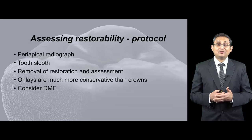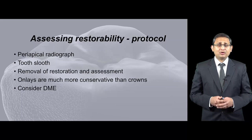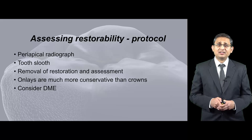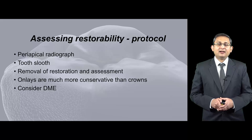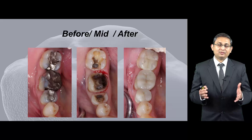Then you're going to remove the restoration and assess the tooth. As discussed in the photography lecture, you're going to take photographs and explain to the patient what situation the tooth is in. Onlays are much more conservative than crowns, so unless the patient is really symptomatic, I would prefer an onlay. Also consider deep margin elevation if the margins are deep and you can't get proper isolation.